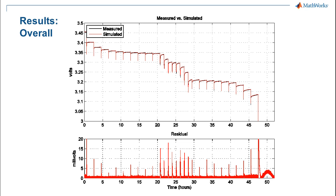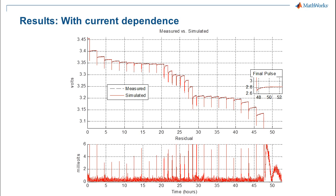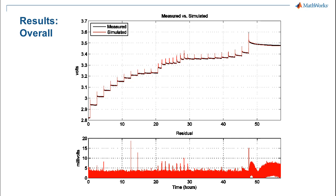Another thing we tried was to make the time constants dependent on the polarization current, allowing the RC branches to have different time constants during the pulse and during relaxation. That cut the transient residuals roughly in half with a max of 9 millivolts.